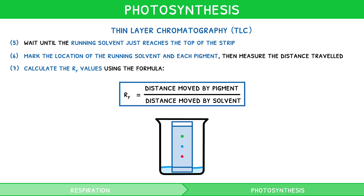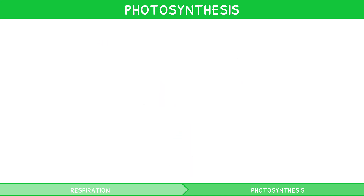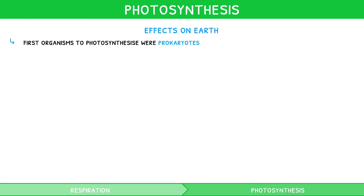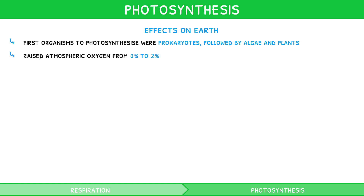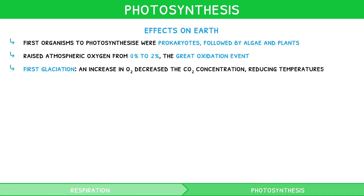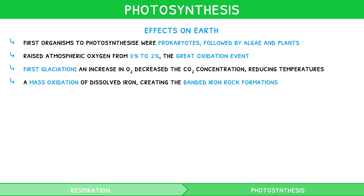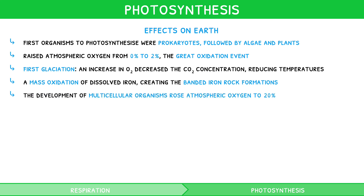Photosynthesis occurs in chlorophyll pigments of many living organisms, but when did this all begin and what was the effect on Earth? The first organisms to photosynthesise were prokaryotes about 3,500 million years ago, followed by algae and plants about 2,200 million years ago. This raised atmospheric oxygen from 0 to 2%, known as the Great Oxidation Event. This coincided with the first glaciation, presumably since an increase in oxygen decreased carbon dioxide concentration, reducing global temperatures. As a result, there was a mass oxidation of dissolved iron in the water, which created the banded iron rock formations we see today. However, it wasn't until the development of multicellular organisms that atmospheric oxygen rose to 20%, as we see today.